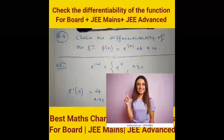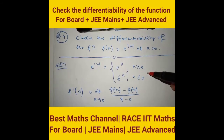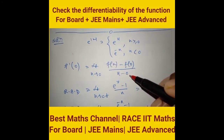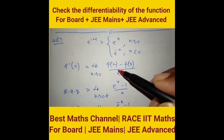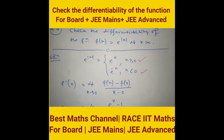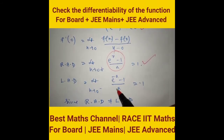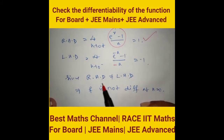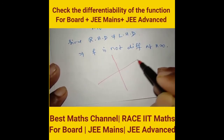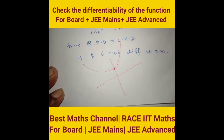Check differentiability of f(x) = e^|x| at x = 0. For |x|: f(x) = e^x for x ≥ 0, e^(−x) for x < 0. Right-hand derivative: limit as x → 0⁺ gives (e^x − 1)/x = 1. Left-hand derivative: limit as x → 0⁻ gives (e^(−x) − 1)/x = −1. Since RHD ≠ LHD, f is not differentiable at x = 0. Geometrically, the graph has a corner point at the origin.